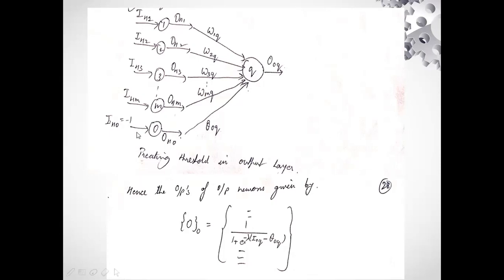This is the bias weight, which has already been discussed. The hidden layer has m neurons. So a bias weight has been added with value minus one, and here it is defined as the threshold, that is theta.